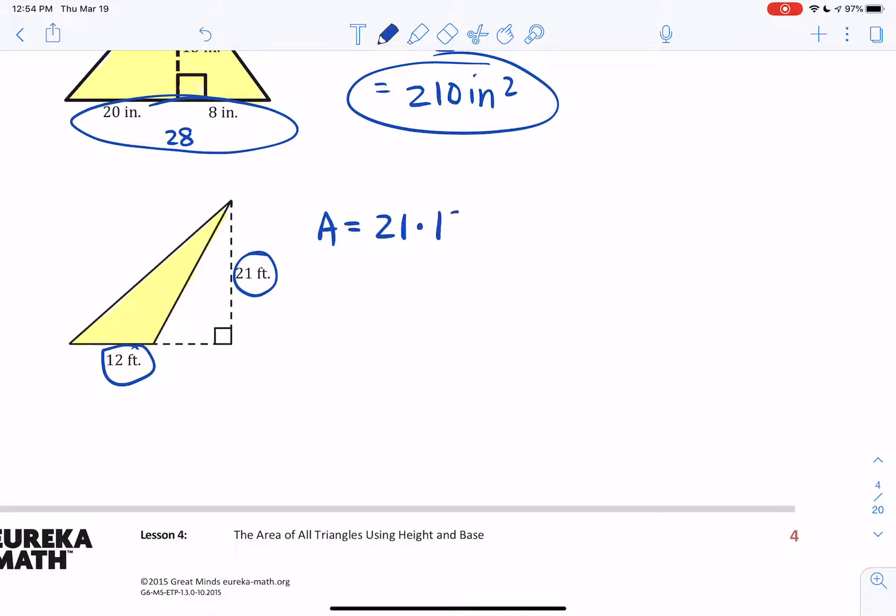Base. Height. Divide it by 2. Right? And then I'm going to do some mental math. I did this on the lesson video. I'm going to take these two numbers and divide by 2. 12 divided by 2 is 6. So I end up getting 21 times 6. And without having to use a calculator, I know how to do this. 6 times 2 is 12. So 120 technically. And then 6 times 1 is 6. 126 feet squared.